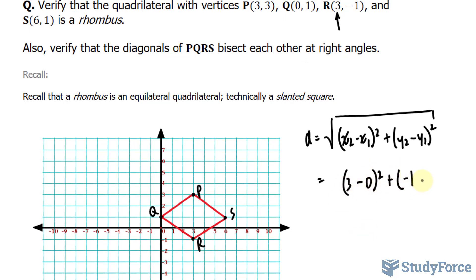y2, negative 1, minus, and the y here is 1. Now we can find the difference here. 3 minus 0 is 3 to the power of 2 is 9. Minus 1 minus 1 is minus 2 to the power of 2 is positive 4. So we have the square root of 13. We'll leave it at that. But of course, you can find the decimal version of that number if you like.